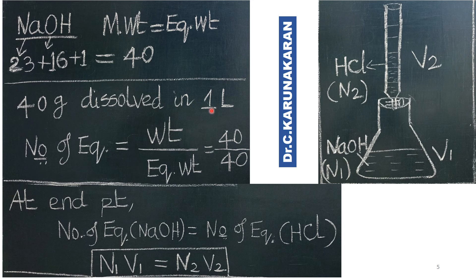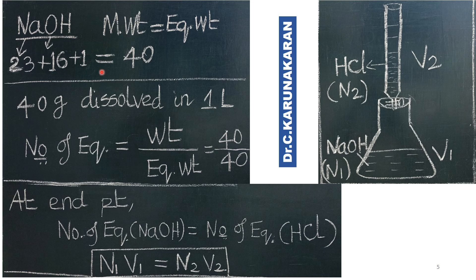How is the number of equivalents calculated? For example, for sodium hydroxide, the molecular weight is equal to the equivalent weight. The molecular weight of sodium hydroxide is 40, obtained by summing the atomic masses: one sodium atom (1×23), one oxygen atom (+16), and one hydrogen atom (+1) equals 40. If 40 g is dissolved in 1 liter, the number of equivalents equals weight divided by equivalent weight = 40/40 = 1 equivalent. If 20 g is dissolved in 1 liter, then 20/40 = 0.5 equivalents.